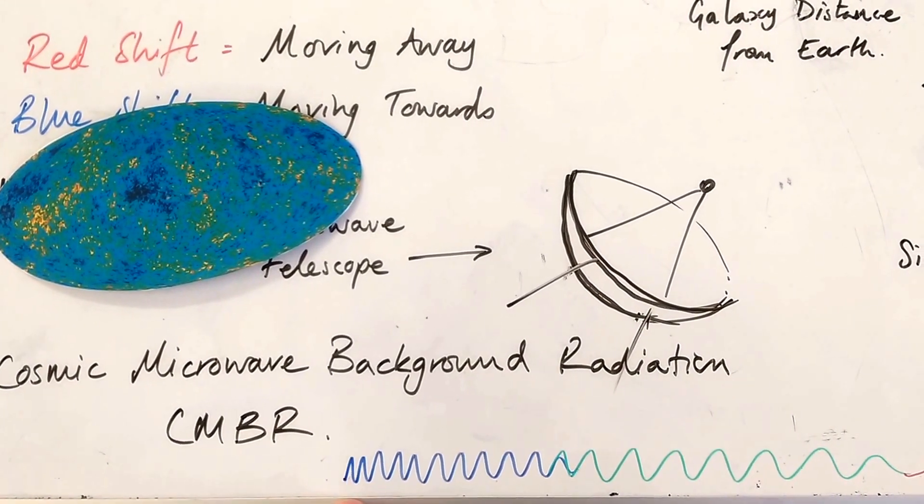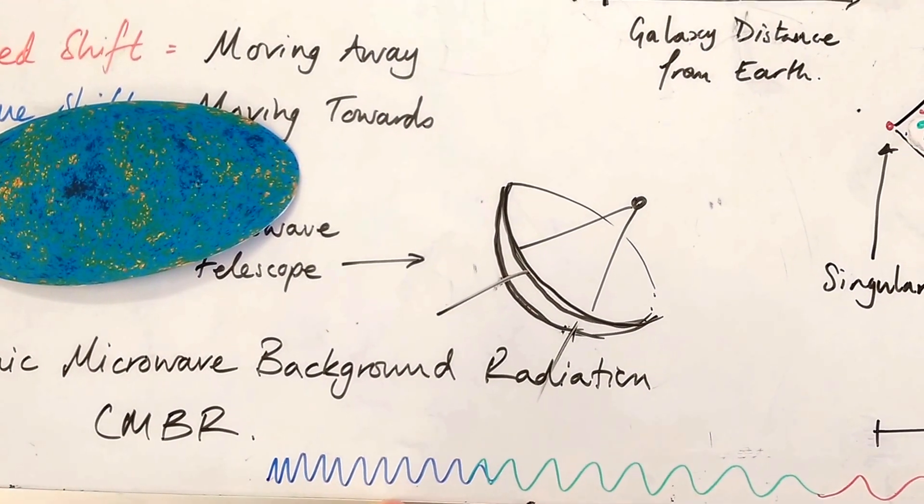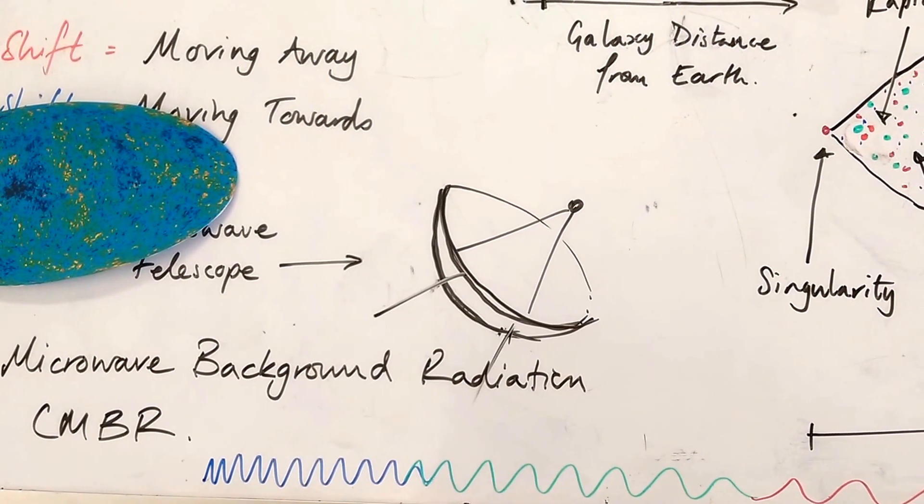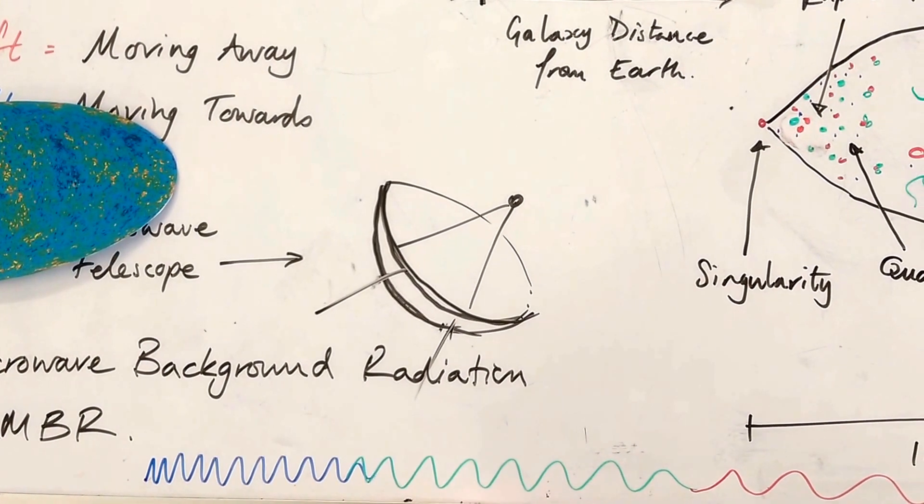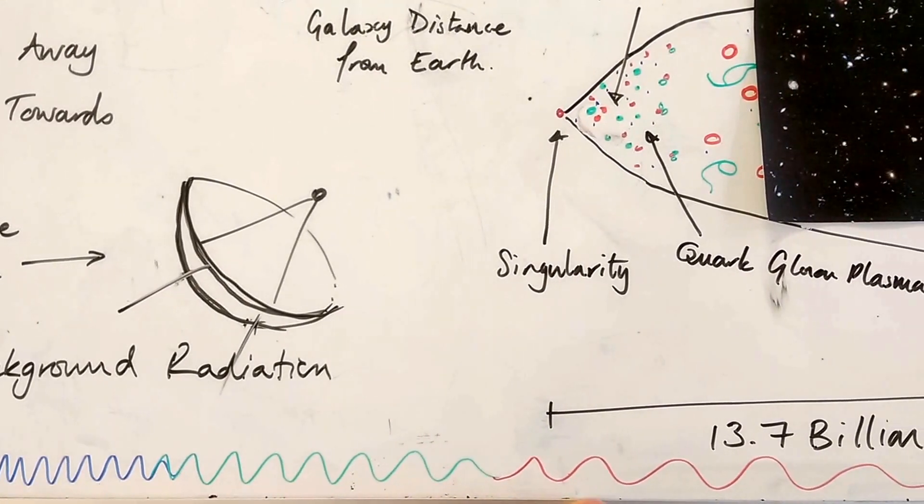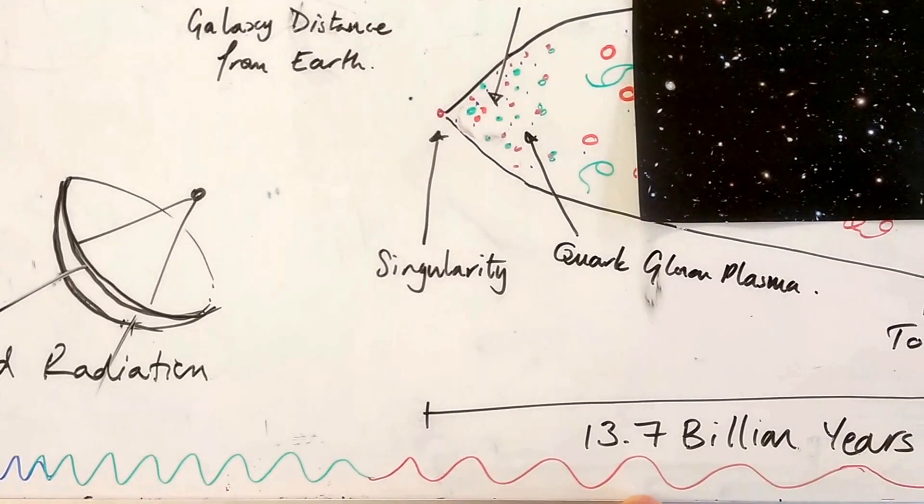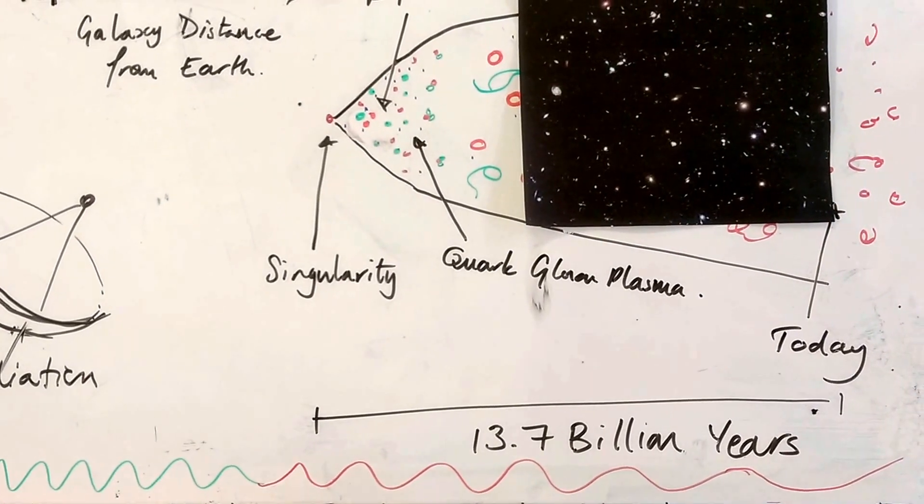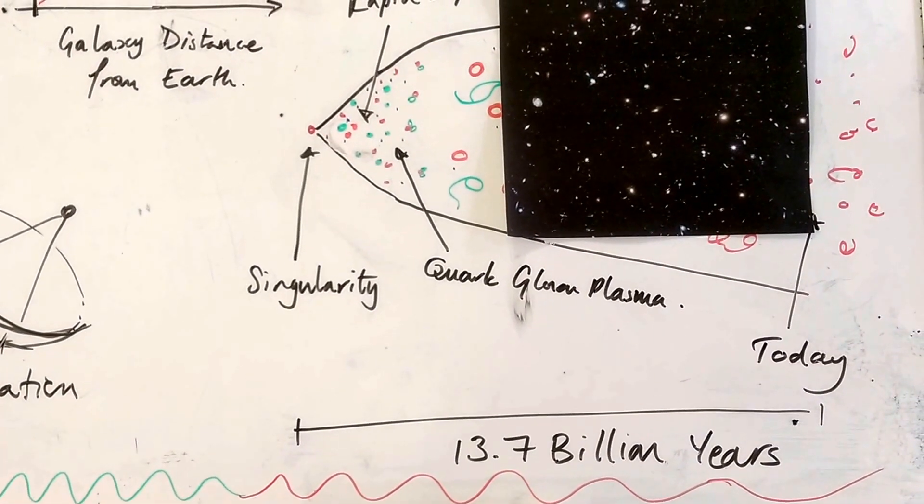As the universe expanded, it too would have reduced in energy and reduced in frequency and lengthened in wavelength through all the different portions of the electromagnetic spectrum until it became redder and redder and redder until it became the microwave portion of the spectrum.